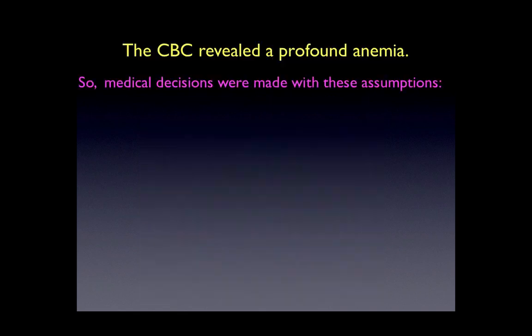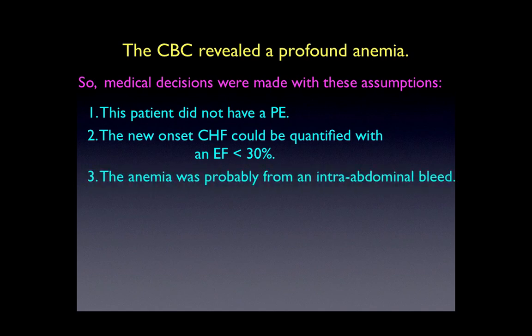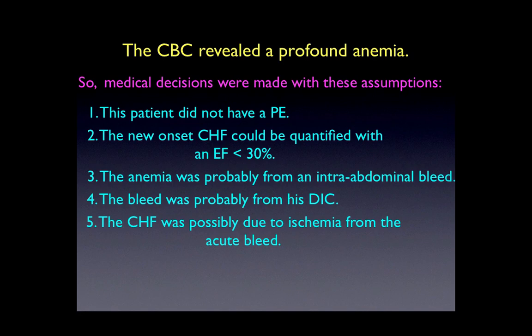The CBC revealed a profound anemia. Medical decisions were made with these assumptions: this patient did not have a pulmonary embolism as shown by the CT angio. The new onset of CHF could be quantified with an ejection fraction significantly decreased at less than 30%. The anemia was probably from an intra-abdominal bleed — the FAST scan showed free fluid and the patient had very significant anemia. The bleed might very well be from his DIC, and the CHF could possibly be due to ischemia from the acute bleed.